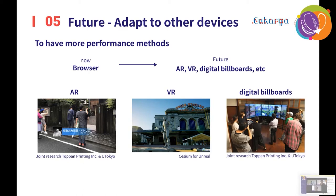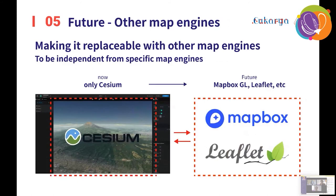We are also thinking about how to display Reels on other types of screens, like billboards and large screen installations. We are also considering making the map engine replaceable. Currently we rely on Cesium, but in the future we will be able to select the map engine to use, such as Mapbox GL or Leaflet, so that we are not dependent on any specific software.